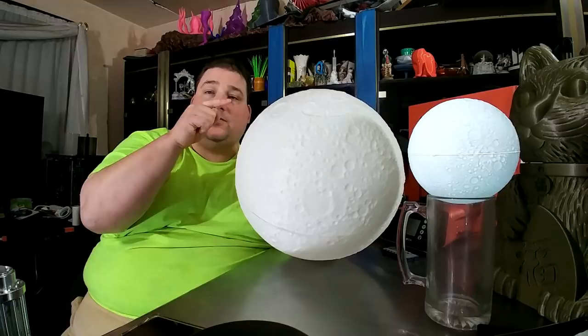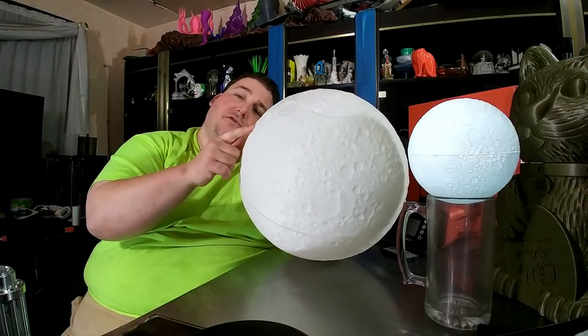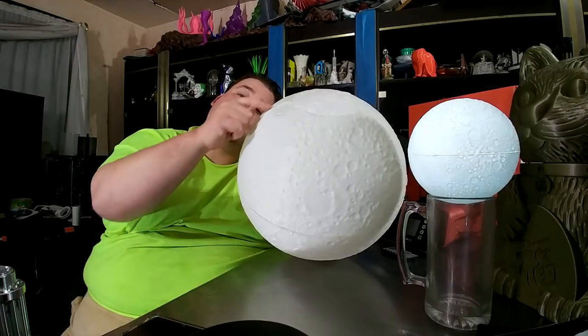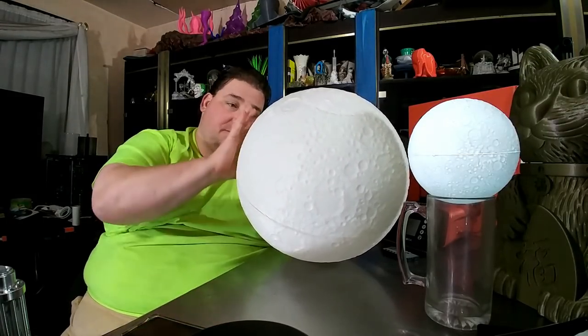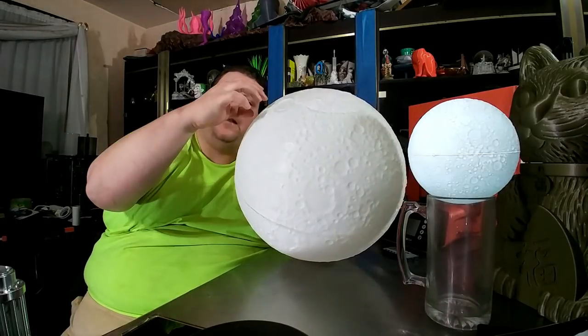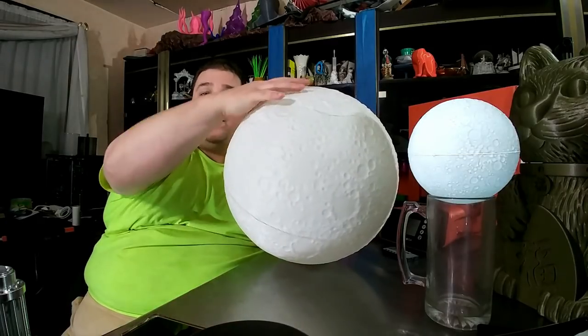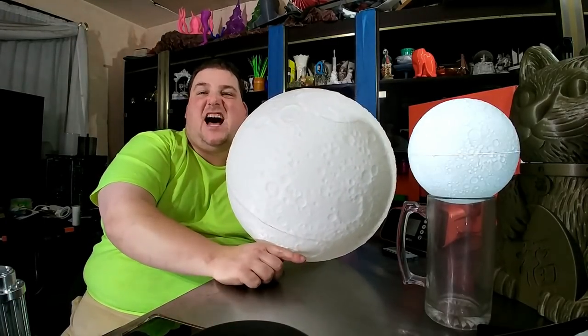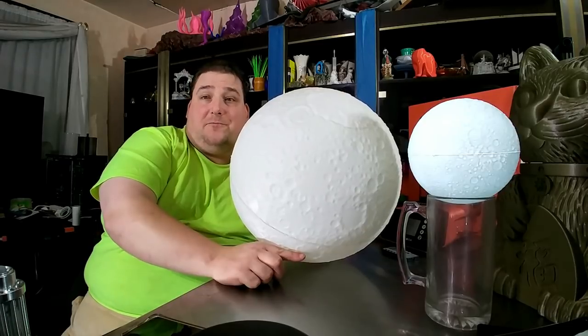I mean sometimes the slicer will add that little lip on the outside and it might work, but the problem is then my illumination will be inconsistent. So this part of the moon will be brighter than this part because it'll be thicker. So better to have just three throughout. But that's going to take a lot of filament. I wouldn't be surprised if it takes a roll or two per half.